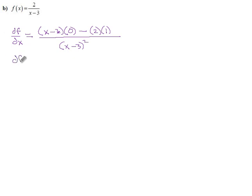Now we can clean that up quite a bit. This entire first section vanishes because it's something times 0, and then we get negative 2 over (x minus 3) squared.